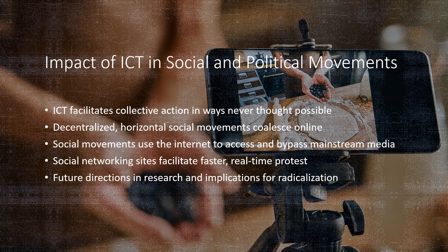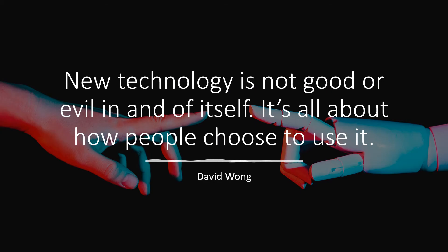Fifth, future directions in research and implications for radicalization: internet optimists argue that ICTs have given voices to those who did not have them and have had a democratizing impact around the world. Radical groups have been organizing and taking collective action over the internet, especially due to low operating costs, enthusiastically adopting technology to reach their intended goals. Online venues have become the meeting place of choice due to the availability of communicating messages to a large number of individuals at a low cost. As David Wong says: new technology is not good or evil in and of itself — it's all about how people choose to use it.